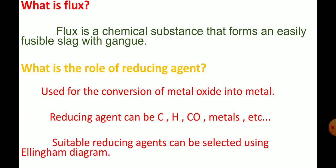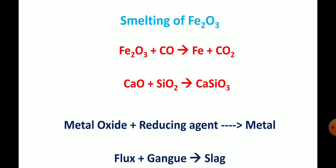There is an example given for the smelting process — that is the smelting of hematite. The formula of hematite is Fe₂O₃. In the first equation, Fe₂O₃ plus carbon monoxide: here carbon monoxide is acting as a reducing agent. It reduces Fe₂O₃ into Fe. On the reactant side Fe₂O₃ is present, and on the product side only Fe is present, so Fe₂O₃ is reduced to Fe. Along with that, carbon monoxide is oxidized to carbon dioxide.